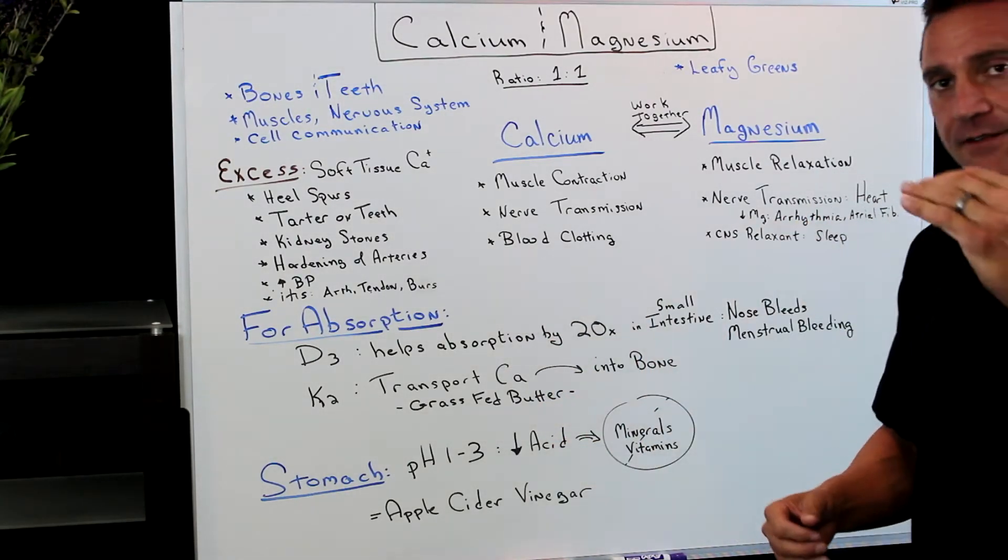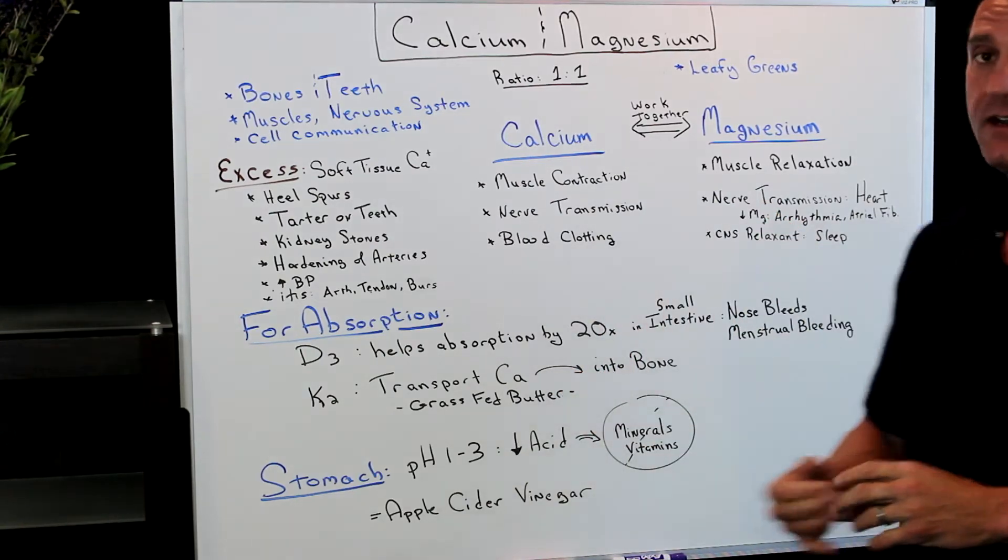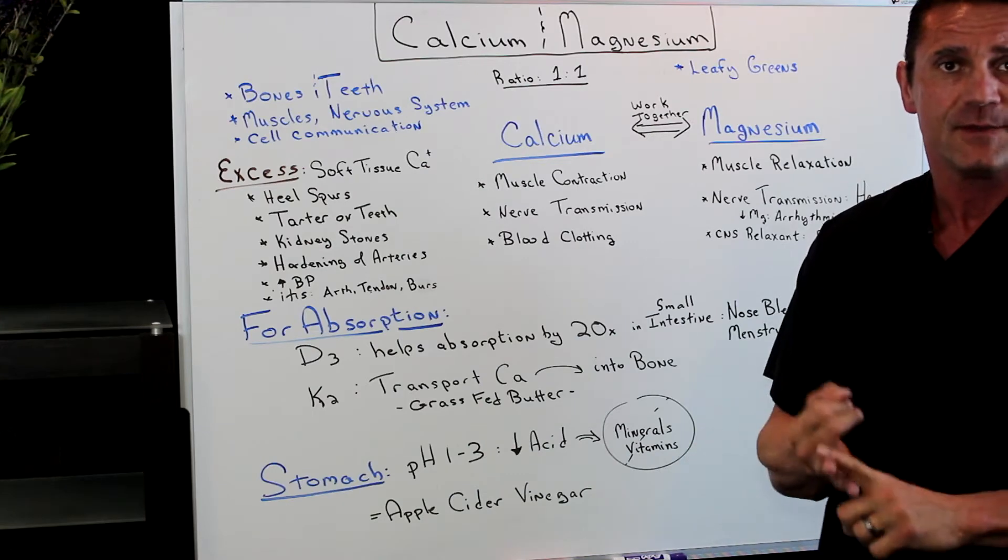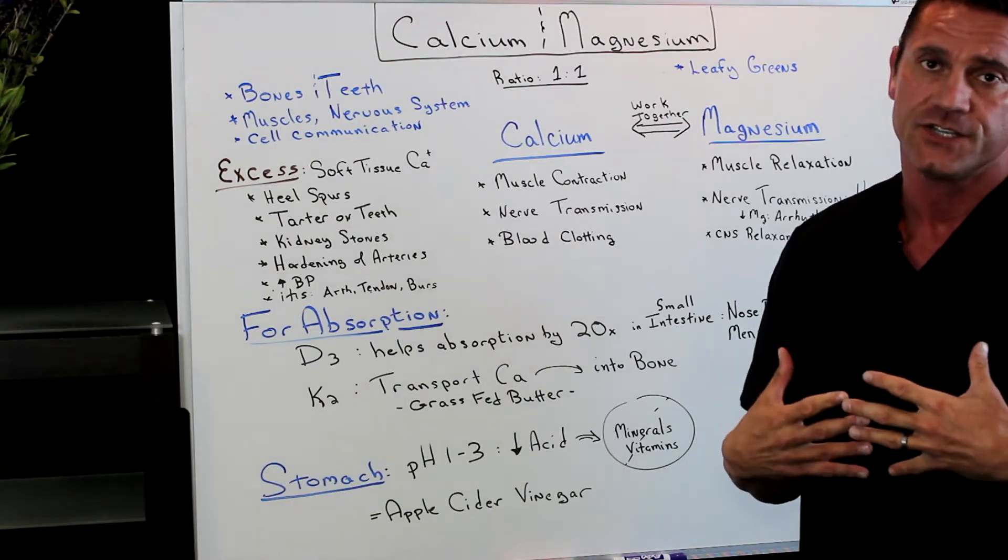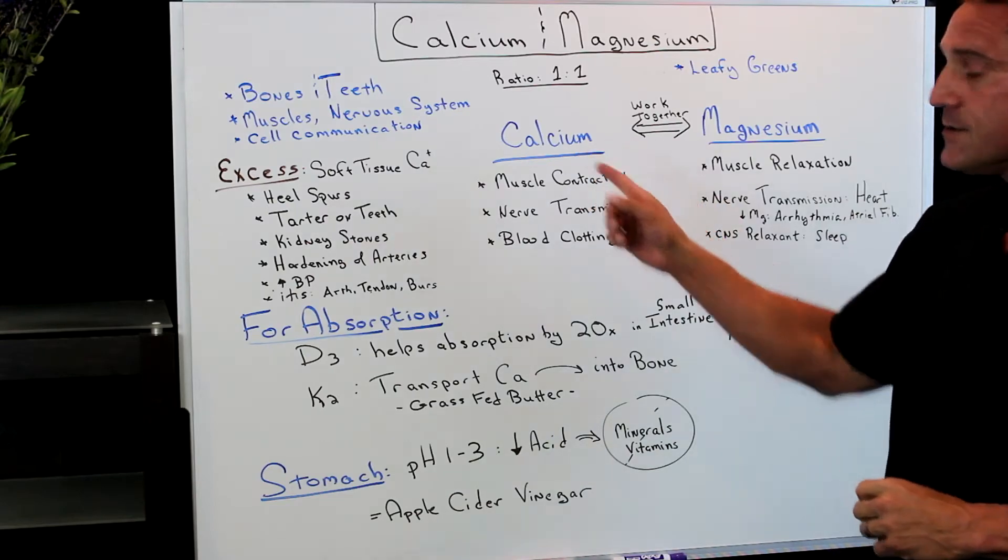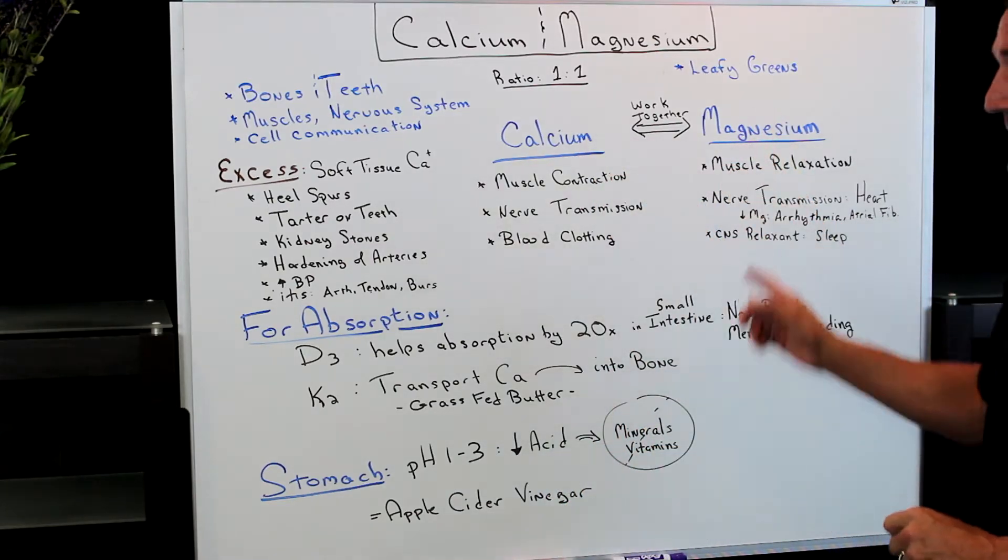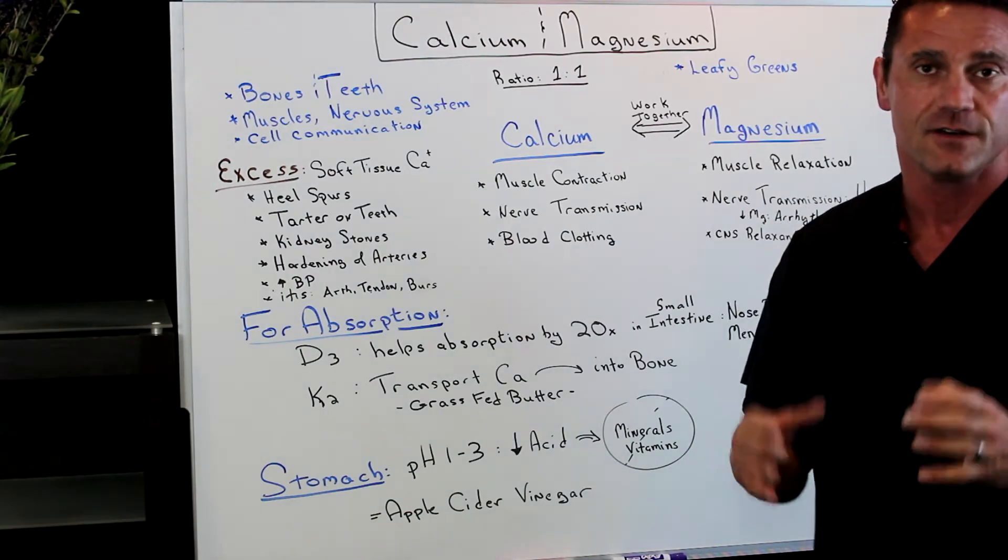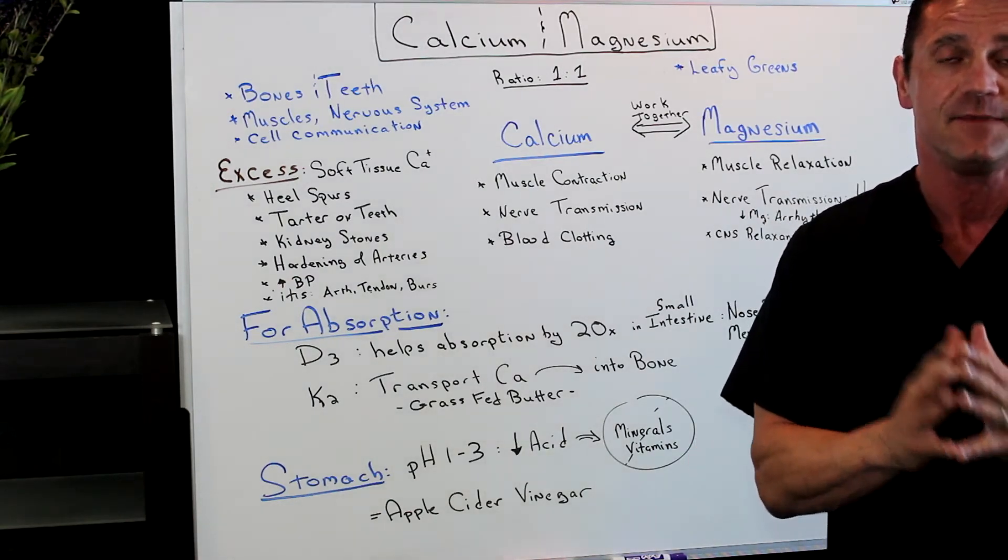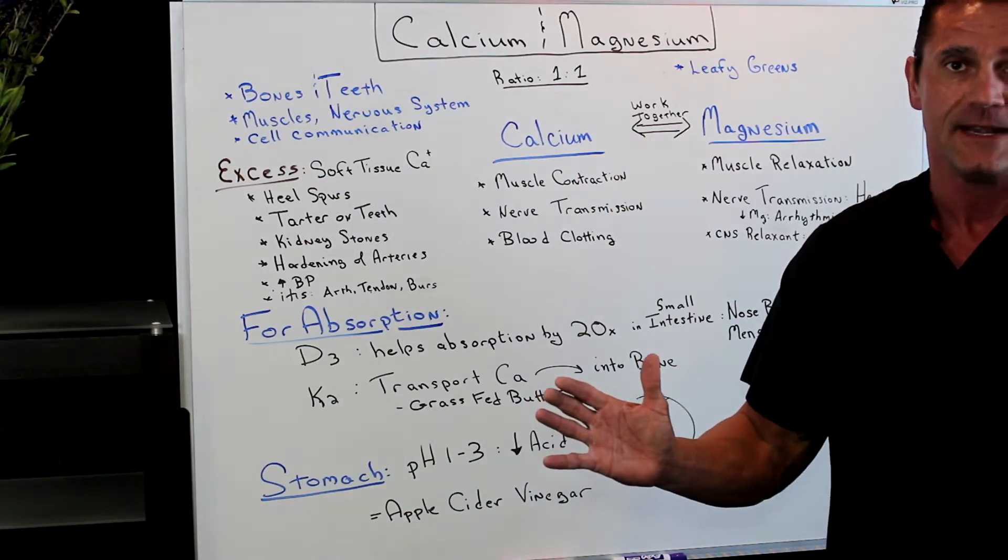So if you have a deficiency of magnesium, not taking enough magnesium, then this is where you get heart arrhythmias, atrial fibrillation, anything that has to do with the heart function, you're not taking enough magnesium. Also, calcium, very important for blood clotting. Magnesium, it's a good central nervous system relaxing. This is why magnesium, if you take magnesium before bedtime, it relaxes the central nervous system. Very important for sleeping.